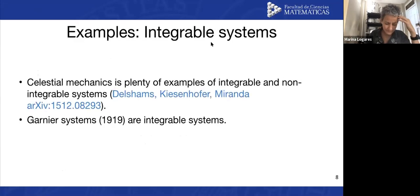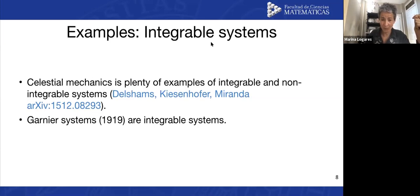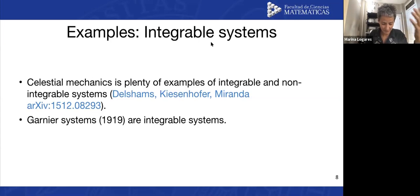Examples: I found a very nice recent paper that takes celestial mechanics systems, and it's full of examples of integrable and non-integrable systems. I chose this one because this year was when Katherine Johnson — one of the main characters of the Hidden Figures movie at NASA — whose work was actually in celestial mechanics and integrable systems. Thanks to her, our astronauts don't get lost on paths that cannot reach their objectives. Also, Garnier systems — which are from the beginning of the 20th century — are integrable systems in this sense.